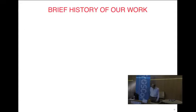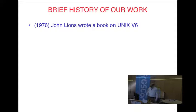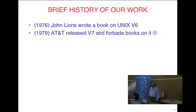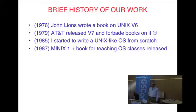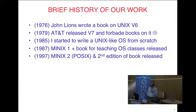Let me give a brief history. In 1976, Professor John Lyons at New South Wales wrote a book on Unix version 6. AT&T then forbade writing about version 7. In 1985, I decided to rewrite Unix on my own — I was young and crazy. It took two years. I released it free of AT&T code, so all the source code was out there available to universities and for non-commercial use.